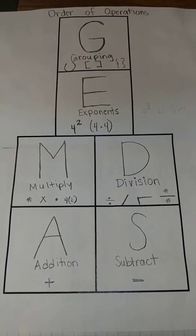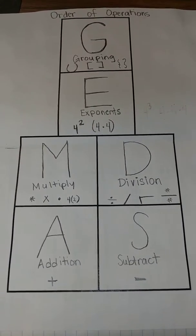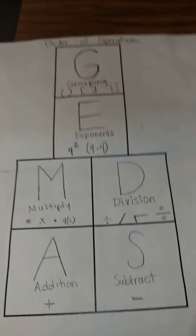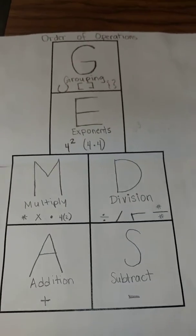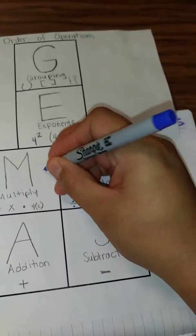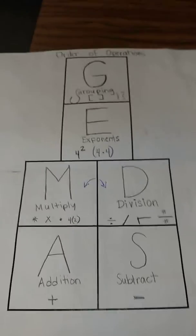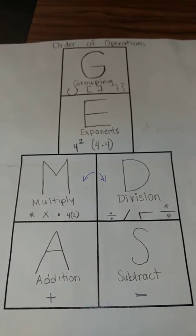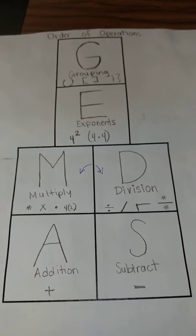Our next thing is going to be multiplication or division. And the reason why I say multiplication or division is because multiplication does not necessarily come first. It can be either or, depending on the number sentence. And I'll explain that further during some examples.